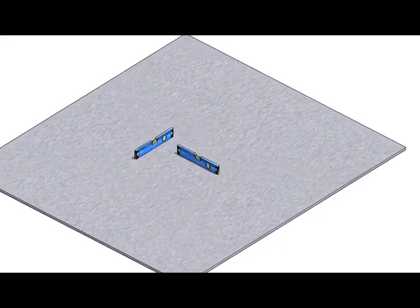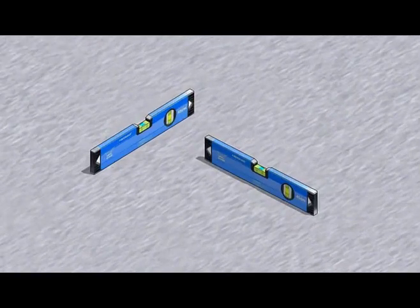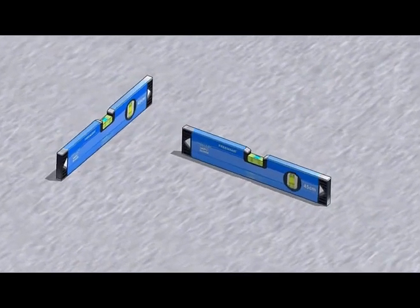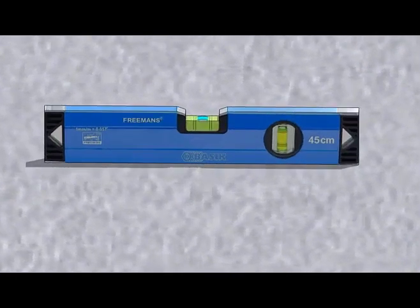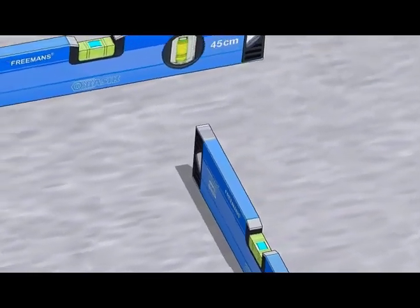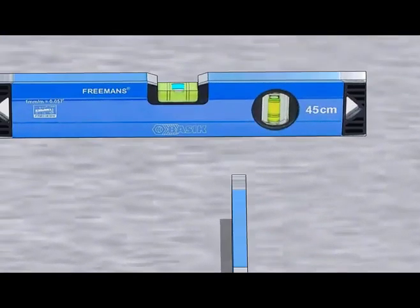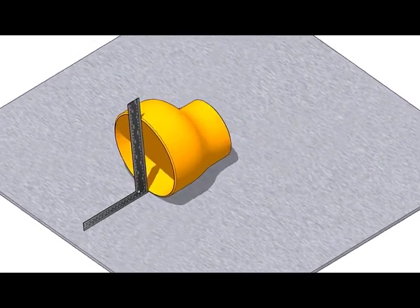First thing to do is to choose a leveled plate or platform. Put the reducer on the plate with the flat portion facing the bottom.